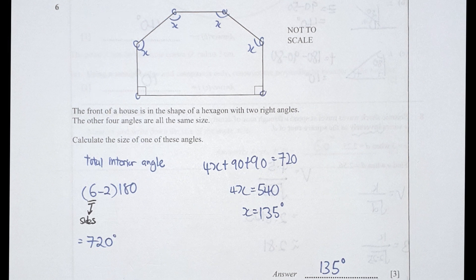So there is a total of six sides for this particular shape. So I use the total interior angle formula to identify the total interior angle first, which is 720. And I set the sides that I don't know as mentioned by the question. They are the same size, so 4x plus 90 plus 90 equals 720, and your x final value will be 135.